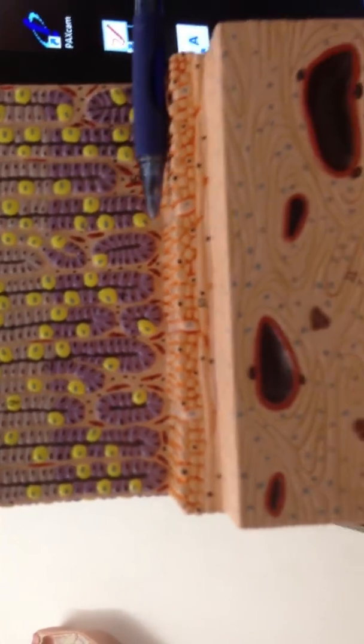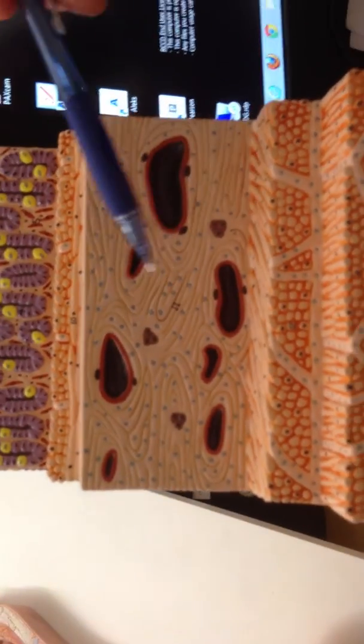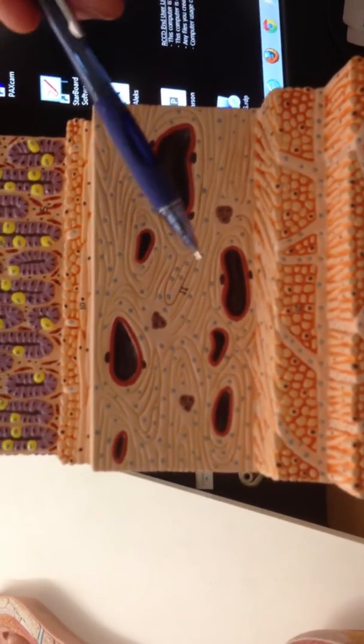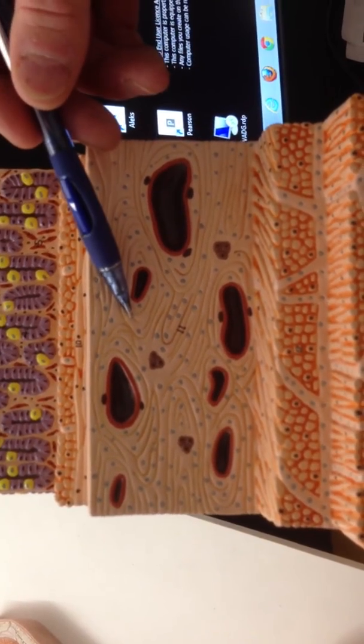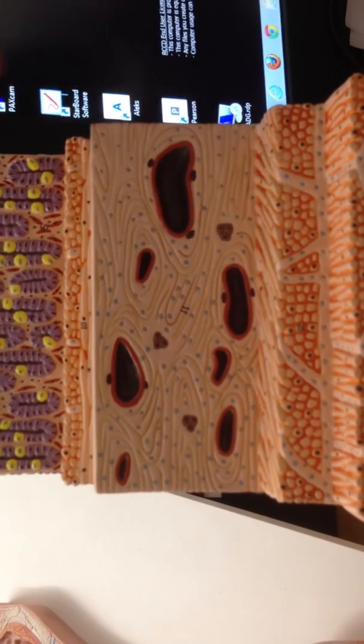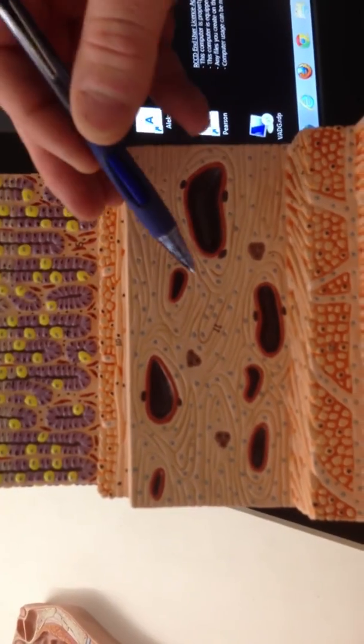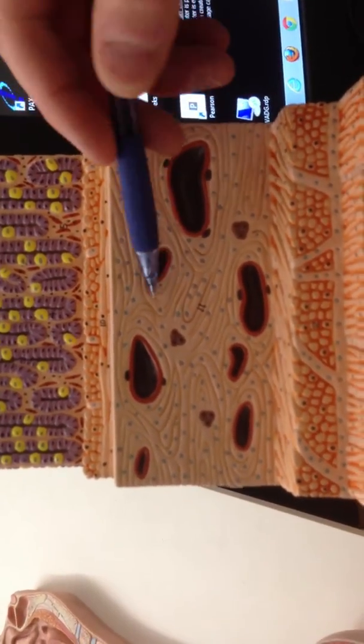Down below the muscularis mucosa, we have the submucosa, which is highly vascular, has submucosal glands and ducts. This is the area where we would modify and help enhance the functions in the gastric pits with Brunner's glands, for example, as the chyme leaves the stomach.